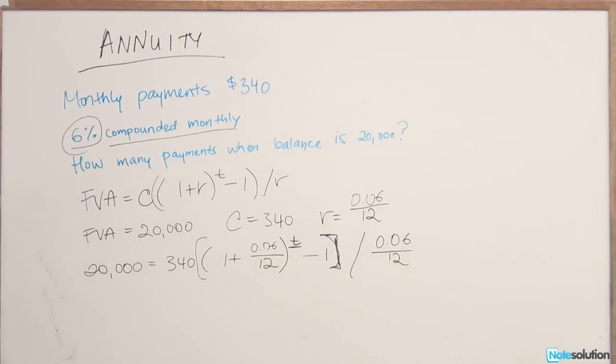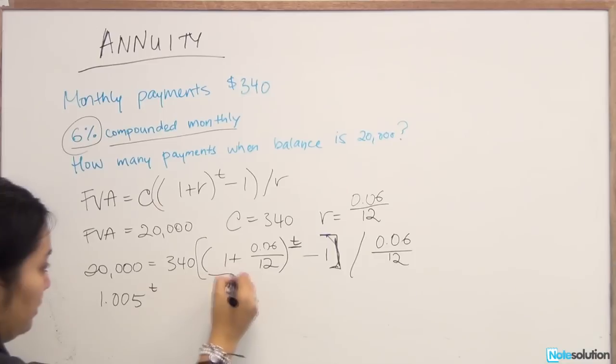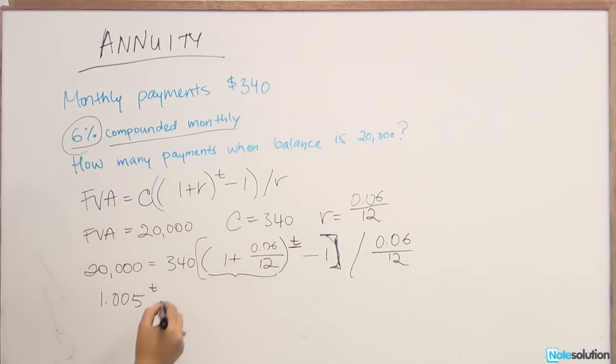Now once you rearrange the equation a little bit to solve for t, we're going to simplify it and get 1.005 to the power of t, which is equal to this expression.